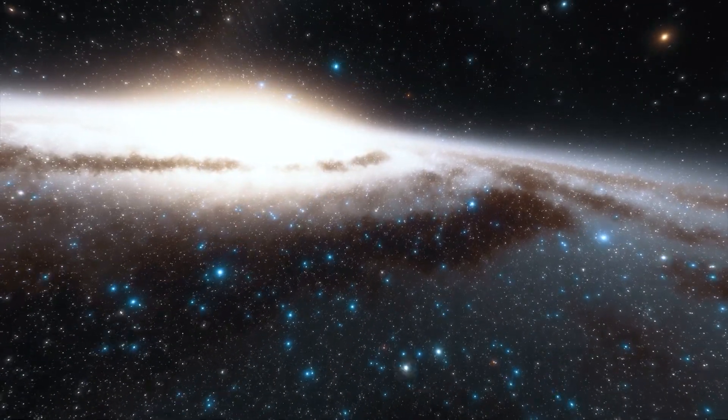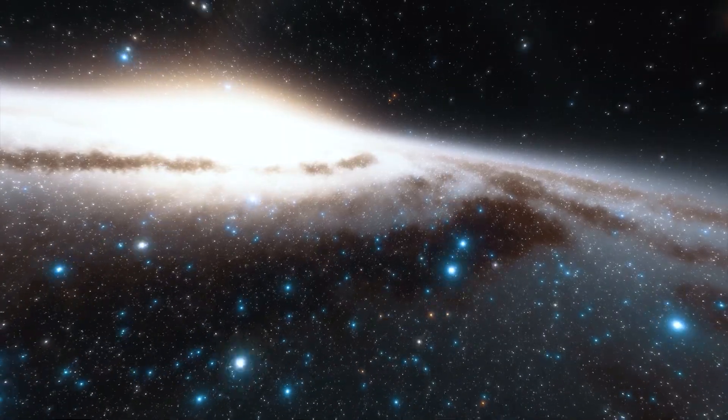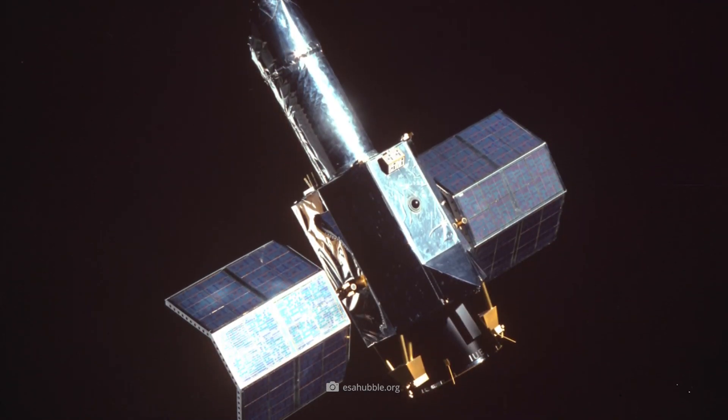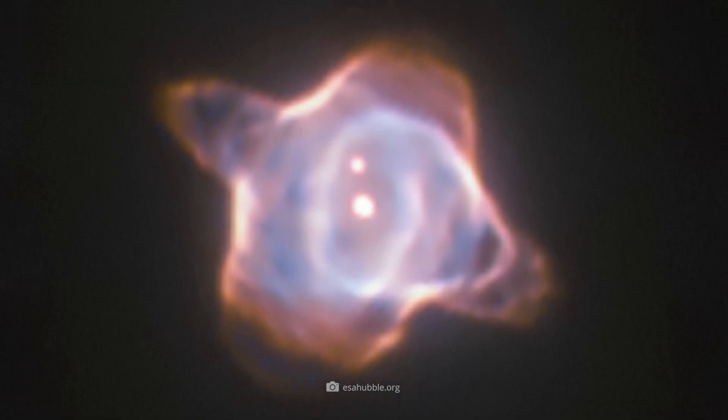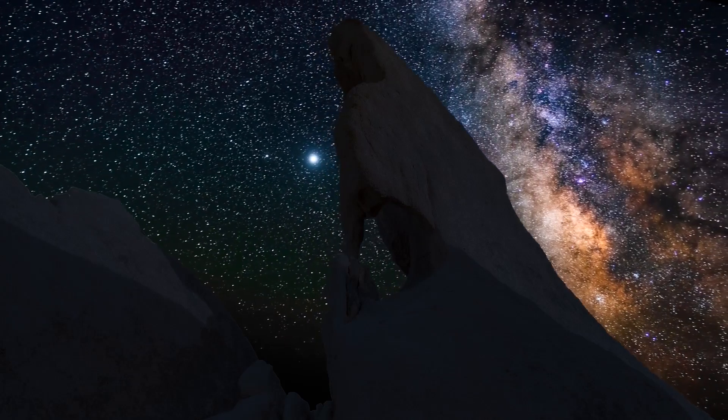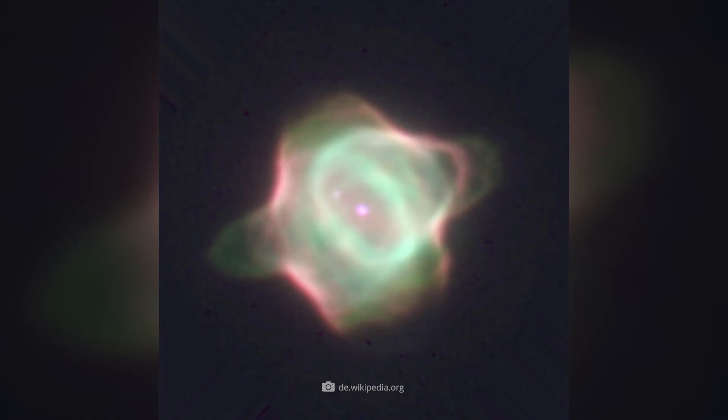The tangible proof that it was indeed a planetary nebula was to be provided in 1993 with the help of the International Ultraviolet Explorer Space Telescope. In fact, this observed event was to be an astronomical milestone. In previous models, experts had predicted that the transition time of a star to a planetary nebula would be at least 100 years. However, the Stingray Nebula proved that this process can be completed in about 20 years.